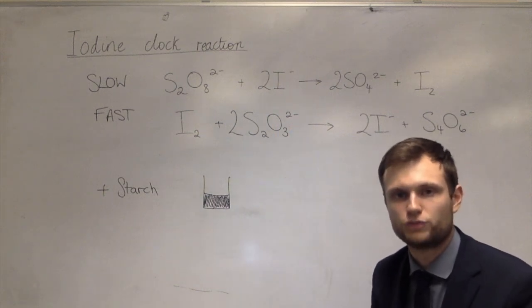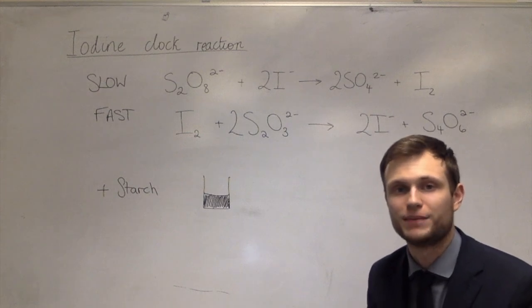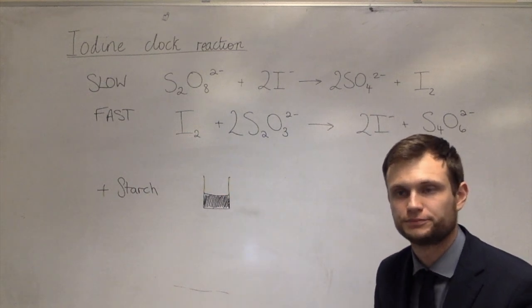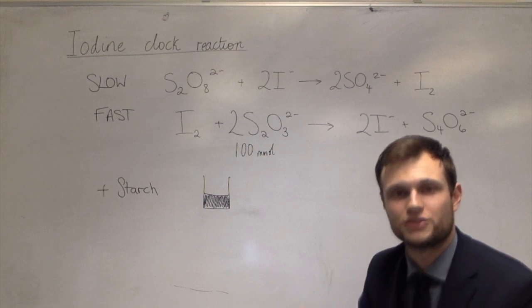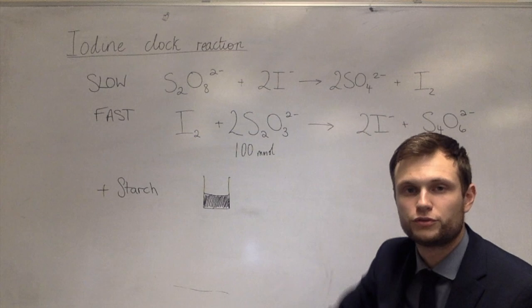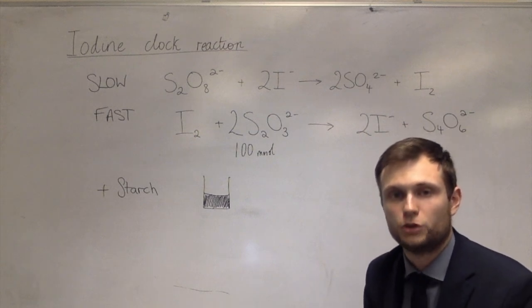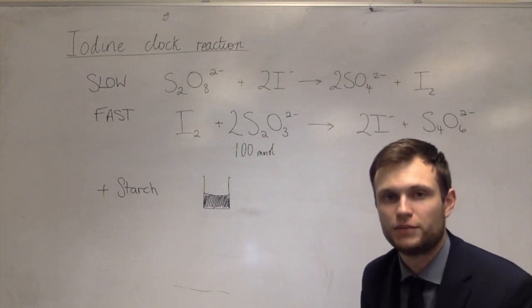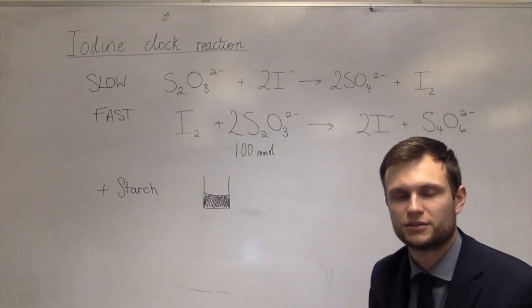So let's say we put in one millimole of thiosulfate. That tells us that at the instant it turns black, one millimole of thiosulfate has been used up. It also tells us that half a millimole of iodine has been used up.